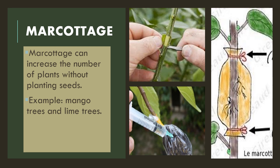Another technology that can be used for plant reproduction is marcottage. Marcottage can increase the number of plants without planting a seed. As you can see from the picture, the marcottage technique works like this. Examples of plants that can be reproduced through marcottage are mango tree and also lime tree.